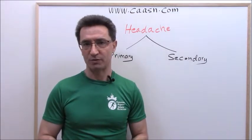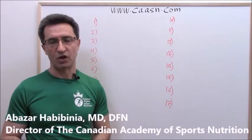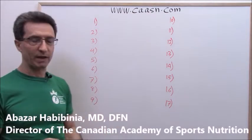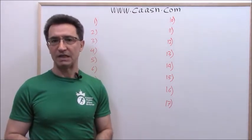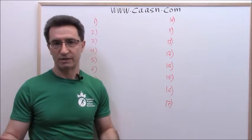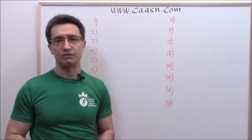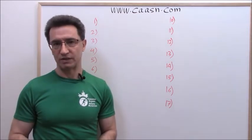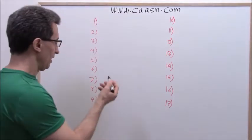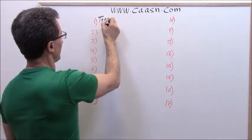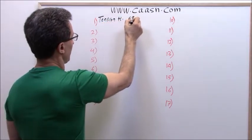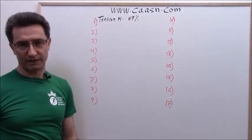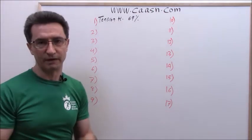Let's see what those 17 types of primary headaches are. I'm going to list them for you today, but I won't go into details on each one — every one of them could fill more than two hours of video. Definitely in the future I'll talk about them one by one, covering their symptoms and treatments. Number one is tension headache, which accounts for 69% of primary headaches. Number two is migraine, which represents about 16% of primary headaches.